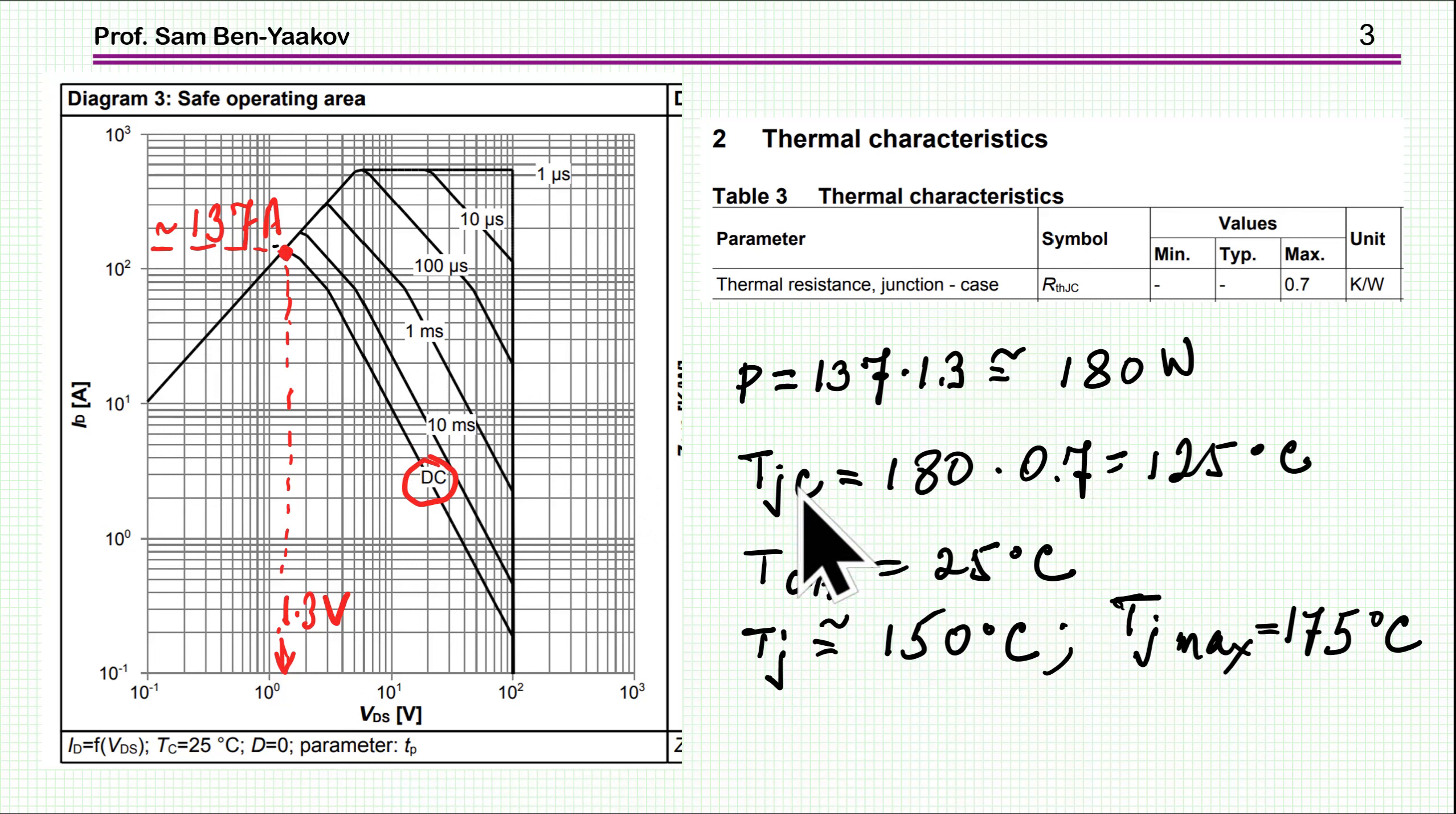The thermal resistance of this device is specified as 0.7 Kelvin per watt. The junction to case temperature is 125. If we add 25 for the case temperature, we come up to 150. This is pretty close to 175, which is the maximum junction temperature. So the limit of 137 amp is actually due to limitation of the junction temperature.